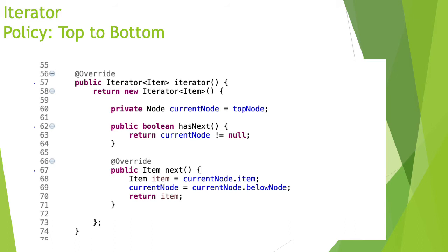Let's start by discussing the iterator. Because of this iterator we changed the policy for the stack — that's why we needed to modify the iteration policy. The iterator starts with the top node, so the next element to be returned when we create an iterator is the top node.